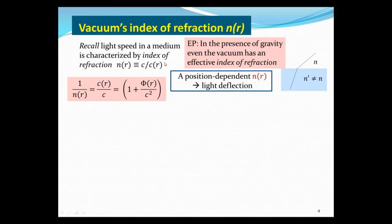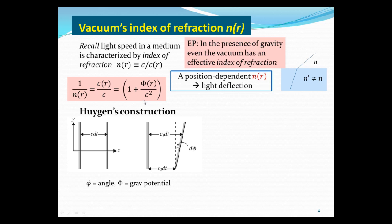A position-dependent index of refraction can lead to light deflection. A familiar example is refraction: going from a medium with index N to one with a different index, the light bends at the sudden jump. But if the index of refraction depends on position gradually, we get a smooth bending. We can calculate this deflection using the Huygens construction. Consider a wavefront: each point is the source of spherical wavelets, and you take the tangent of the wavelets to get the next wavefront. The radius of each wavelet is C times delta t.